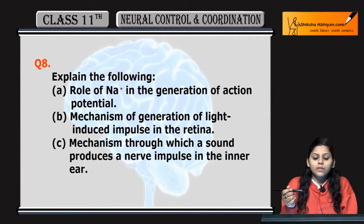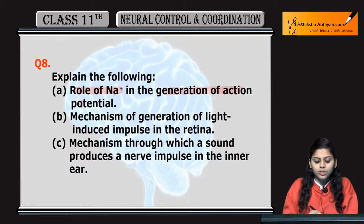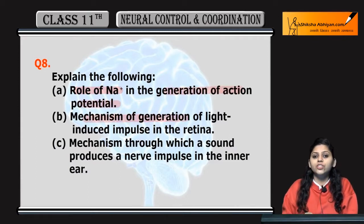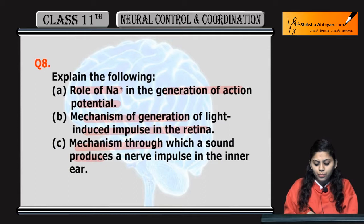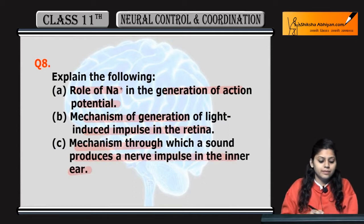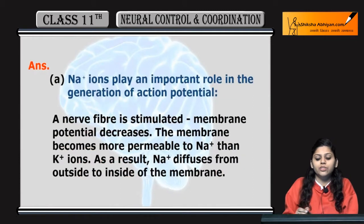Q8: Explain the following — role of sodium ions in the generation of action potential, mechanism of generation of light-induced impulses in the retina, and mechanism through which a sound produces a nerve impulse in the internal ear. First, let's look at the role of sodium ions in generating an action potential.